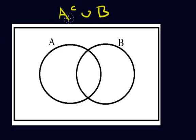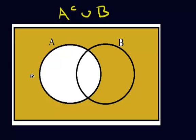So we're doing A complement union B. Let's figure out where A complement is first. A complement would be everything that's not in A. A is the only part that didn't get shaded. So there's A complement.